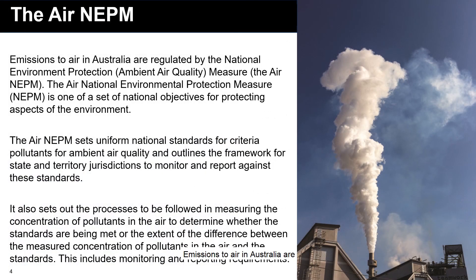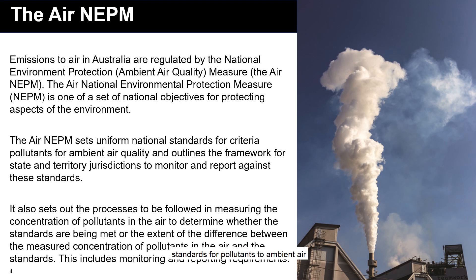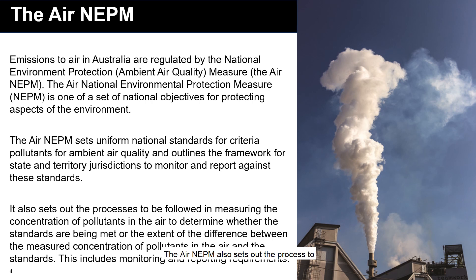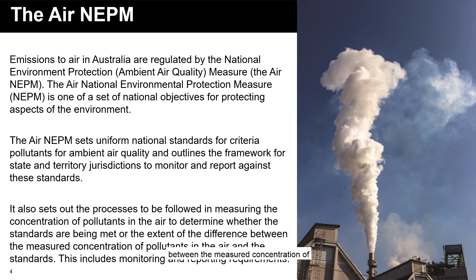Emissions to air in Australia are regulated by the National Environmental Protection Measure for Ambient Air Quality, also referred to as the Air NEPM. The Air NEPM sets universal national standards for pollutants to ambient air quality and outlines the framework for state and territory jurisdictions to monitor and report against these standards. The Air NEPM also sets out the process to be followed in measuring the concentration of pollutants in the air to determine whether the standards are being met, or the extent of the difference between the measured concentration of pollutants in the air and the standards.